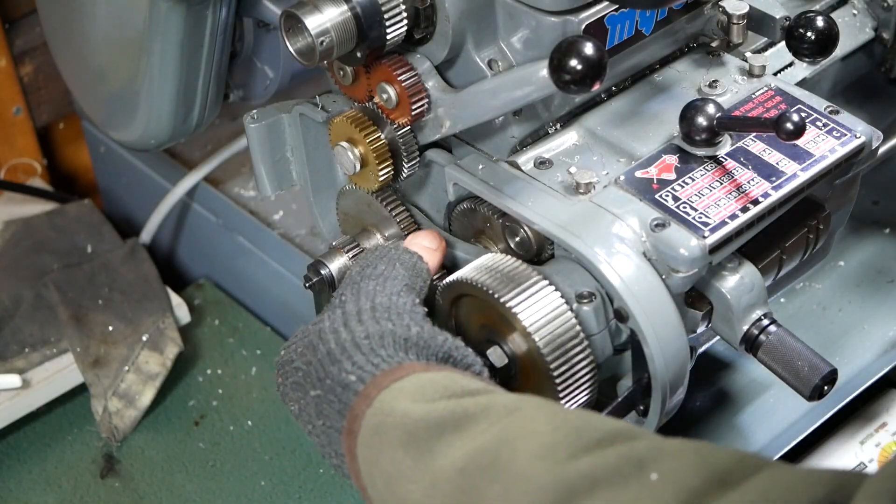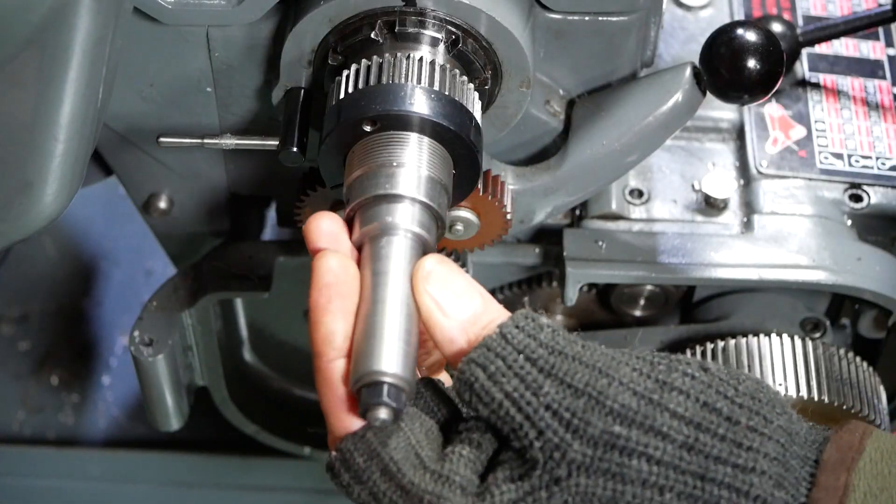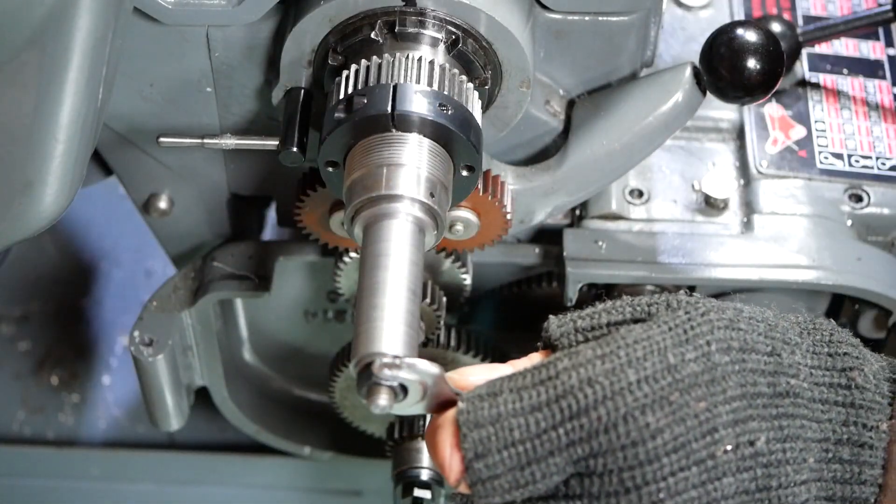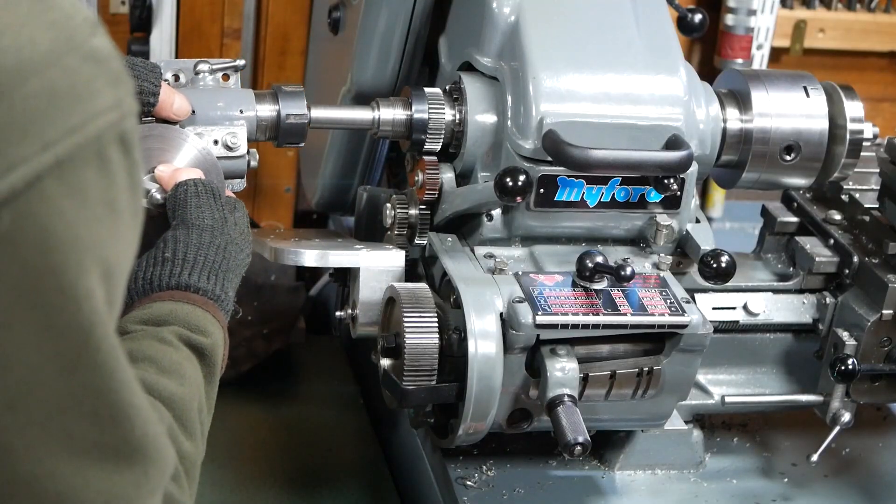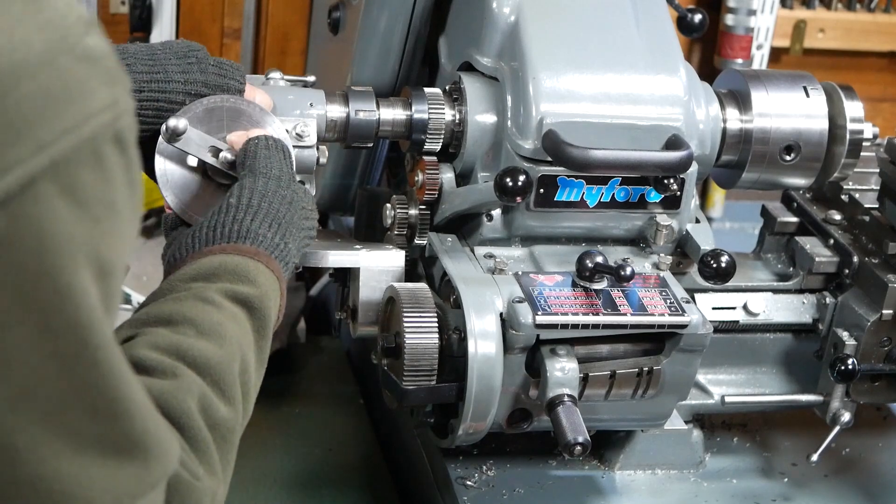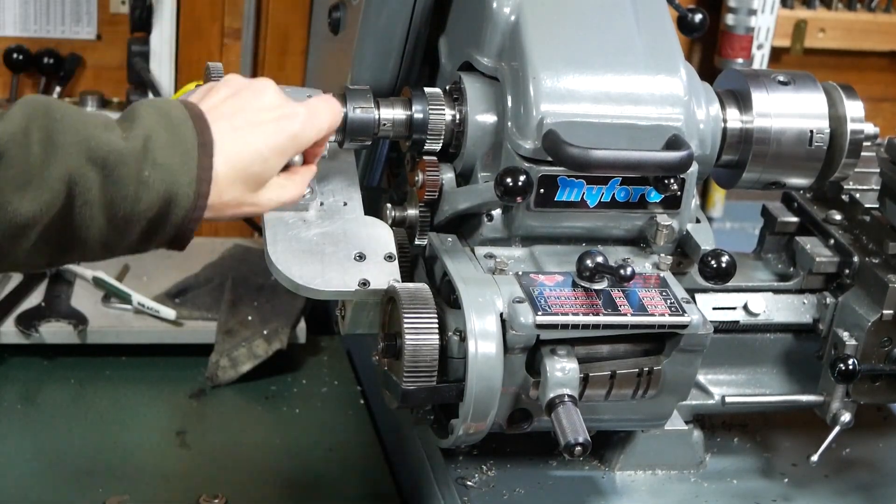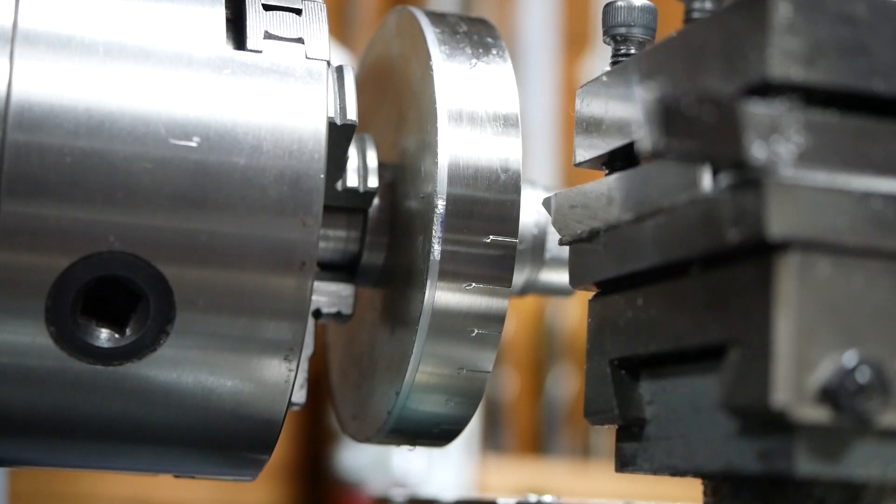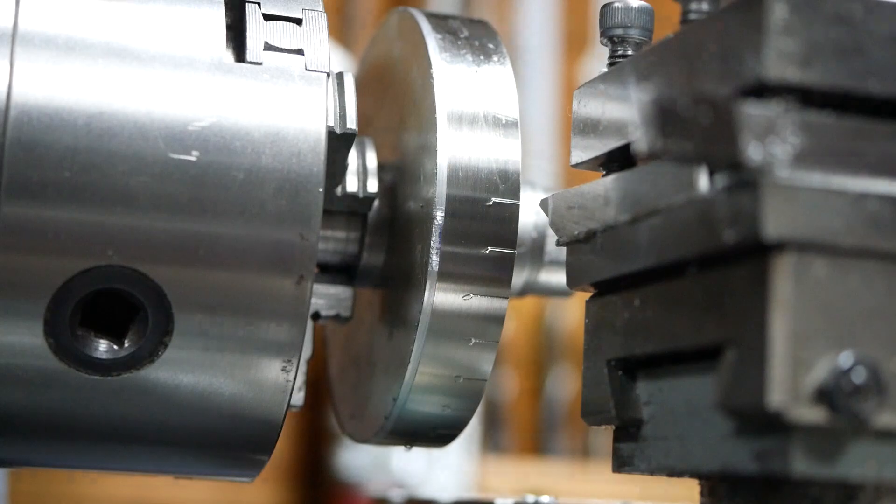We've shown the dividing setup in the lathe on one of our previous videos, where we make a custom DTI dial, but I'll quickly skim over it again. A mandrel is mounted in the back of the spindle, which provides a spigot to attach the George Thomas Shopmade Versatile Dividing Head. This particular Myford is a big bore, so it might look a little bit different to those of you who are familiar with the traditional Myford Super 7 or ML7 lathes.